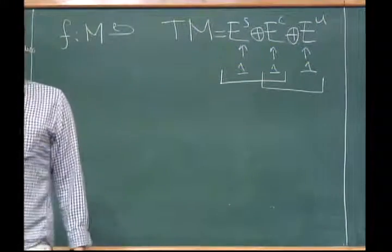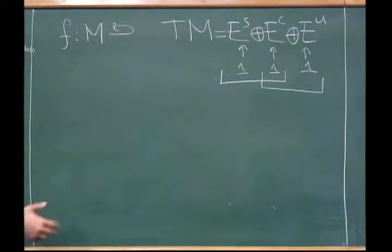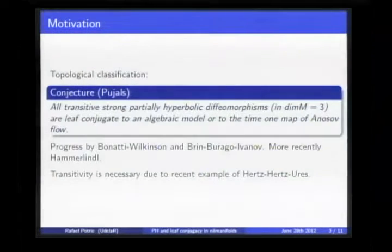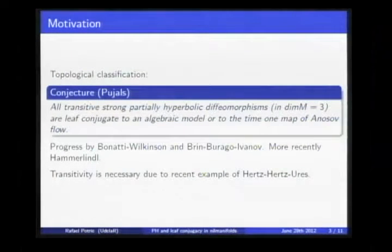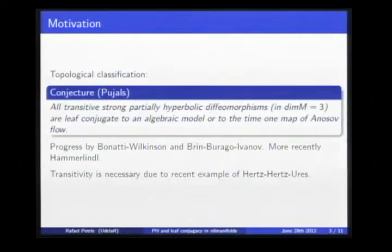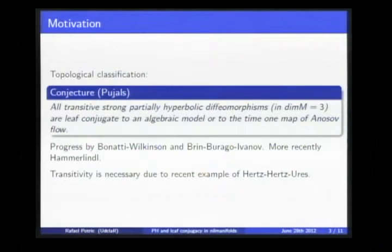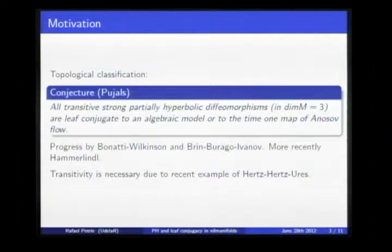For the stable and unstable bundles integrability is well known by classical results. For the center bundle, it's already an interesting question. Here is the definition of dynamical coherence I will use: I say that a strong partially hyperbolic diffeomorphism is dynamically coherent if both the center-stable and center-unstable sum of bundles integrate into an f-invariant foliation. This already implies the existence of a center foliation and allows one to define the concept of leaf conjugacy.